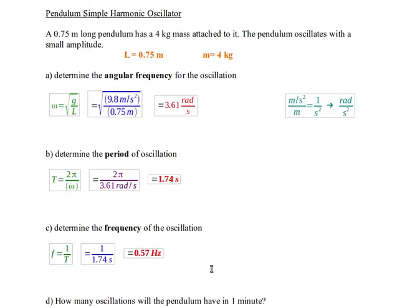Now, the other equation I could have used for this relates my frequency to the angular frequency. And so I would have my angular frequency over 2 pi. So I could have come back here and had my 3.61 divided by 2 pi.